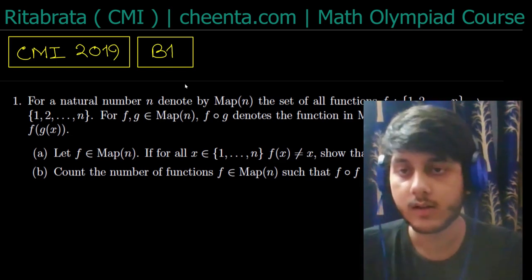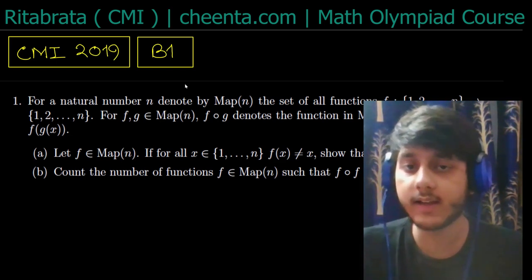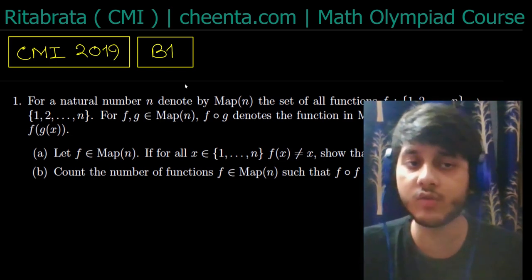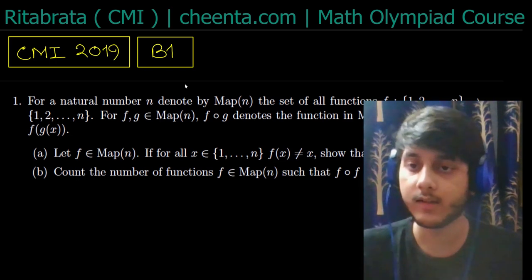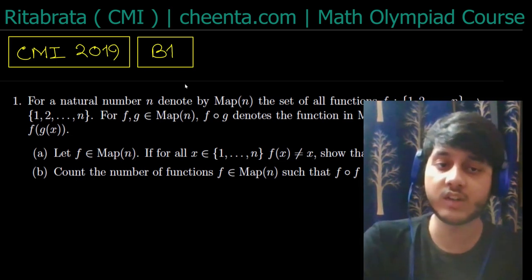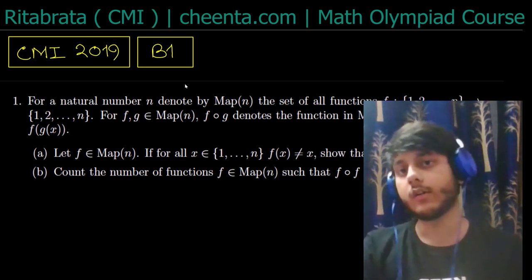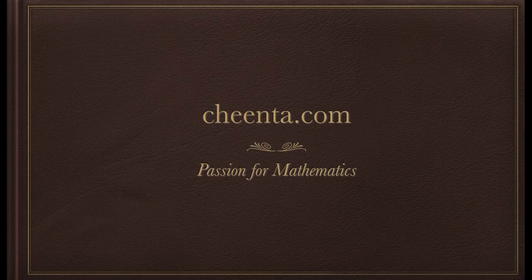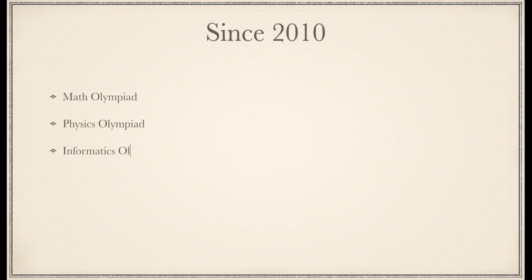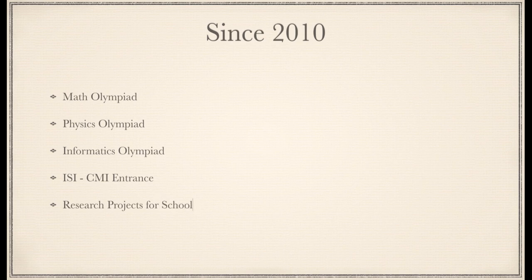For f in Map(n), if for all x in {1, ..., n}, f(x) ≠ x, I have to show that f∘f is not equal to f. In the second part, I have to count the number of such functions such that f∘f is identically equal to f. This video is sponsored by Chinta.com — since 2010, Chinta has trained thousands of students worldwide in mathematical olympiads, physics, computer science, ISI/CMI entrances, and research projects.